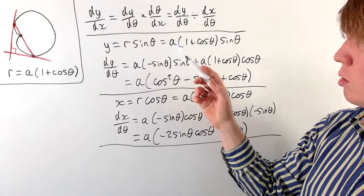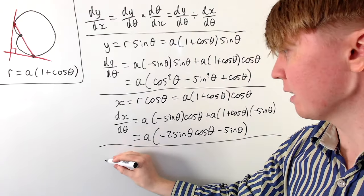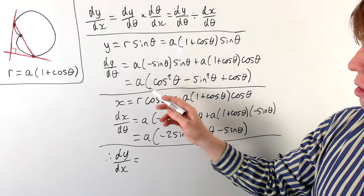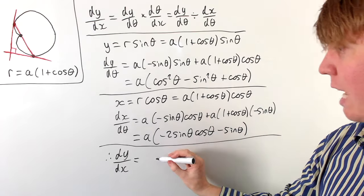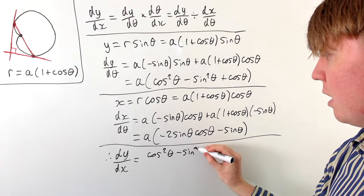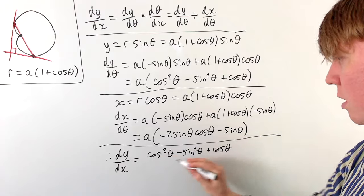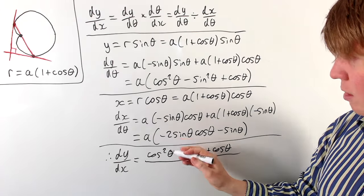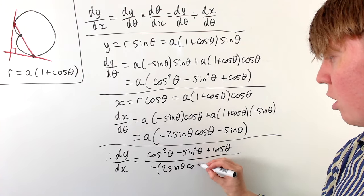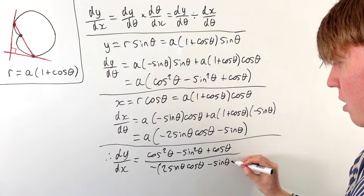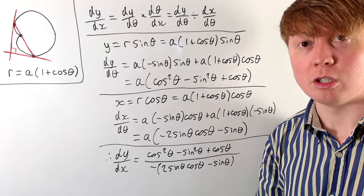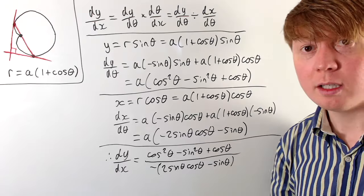Then dy/dx equals dy/dθ divided by dx/dθ. The A's cancel, so in the numerator we have cos²θ − sin²θ + cos θ, and in the denominator we factor out a negative, giving −(2 sin θ cos θ + sin θ). This is the gradient of the tangent to the cardioid at point theta.